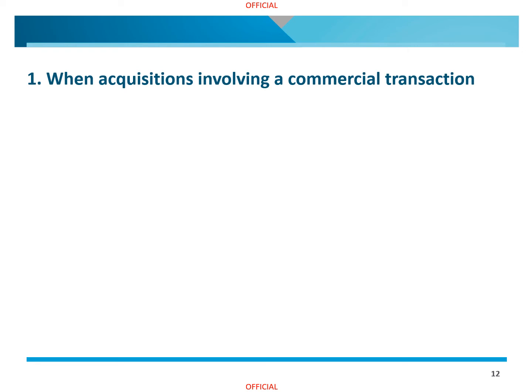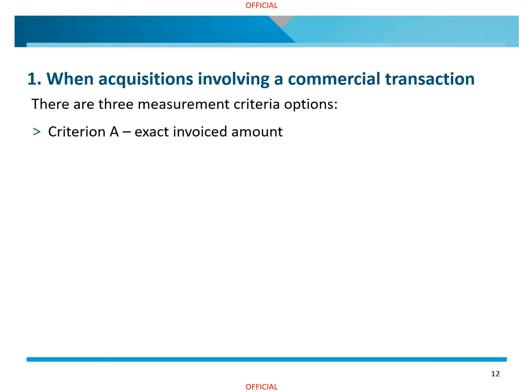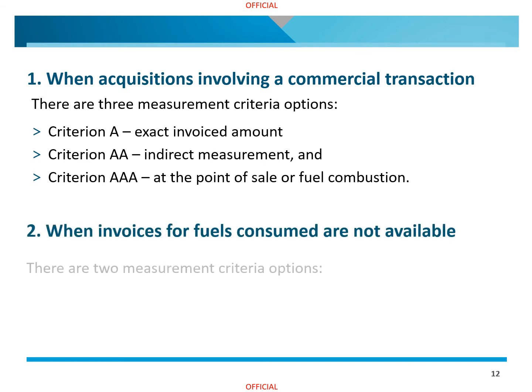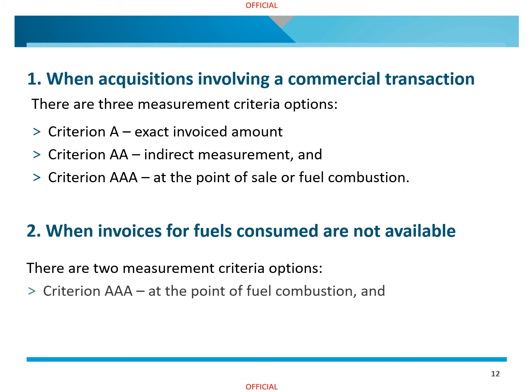When acquisitions involve a commercial transaction, there are three measurement criteria options: Criterion A for quantities verified by invoices; Criterion AA for indirect measurement, such as verifying quantities by stockpile change estimation and invoices; and Criterion AAA for measurements taken at the point of sale or fuel combustion. When invoices for fuels consumed are not available, there are two measurement criteria options: Criterion AAA for measurements taken at the point of fuel consumption or at the point of sale, and Criterion BBB for quantities measured or estimated in accordance with industry practice.